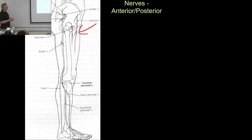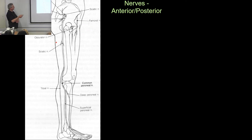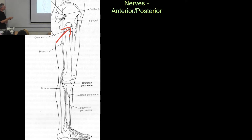The femoral nerve comes anteriorly, between the anterior superior iliac spine and the symphysis pubis. It comes anteriorly and feeds the quadriceps — the muscles of the anterior thigh we looked at last week. Then we have a nerve that comes through the obturator of the pelvis — the obturator nerve. That is more medial and it feeds the adductors, the medial muscles of the thigh, the groin muscles.